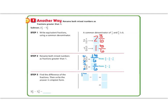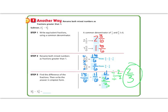15 sixths minus 11 sixths is 4 sixths. I can reduce that because both numbers are divisible by 2: 2 goes into 4 two times, and 2 goes into 6 three times, so my reduced fraction is 2 thirds. We get the same answer, just done a slightly different way. Both methods work and we will practice both methods in class.